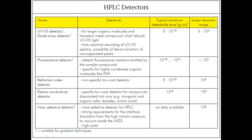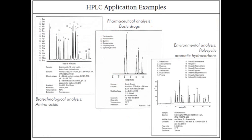In HPLC, the UV-visible detector is most commonly used as it is a light-based detector. Other detectors include a fluorescence detector and a refractive index detector, which is non-specific but has low cost. Spectra can be shown and chromatograms can be produced.